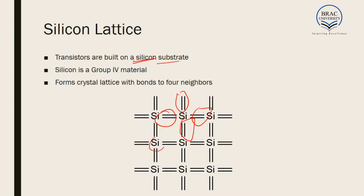This catenation property is also shown by different other elements — for example, germanium and some others. But silicon has another advantage: it is very easily available in nature. Silicon is the second most abundant element in the world. And since the availability is easy, the price of silicon is very low. As a result, silicon is our first choice when we discuss the semiconductor industry.